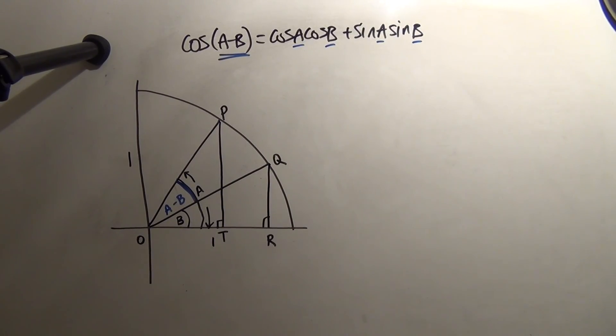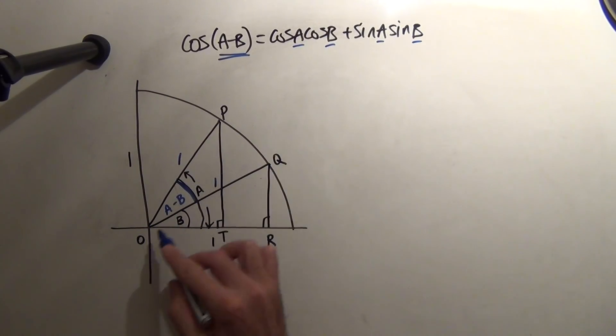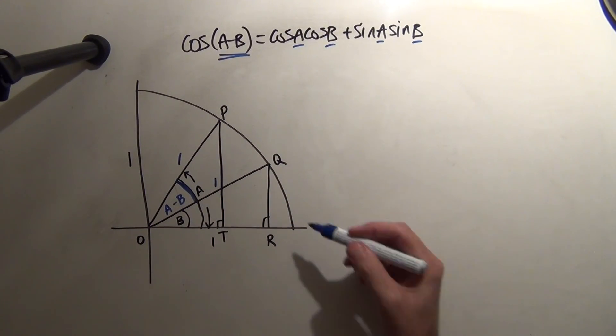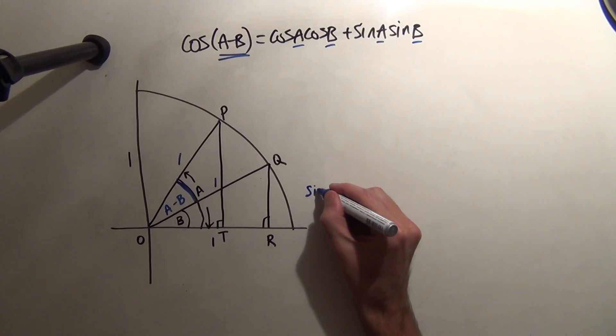Now, by definition, in the unit circle, these radii are 1. Then QR should be the sine of B, because it's in triangle O, Q, R. The angle here is B, so this will be the sine of B, by definition, first principles.